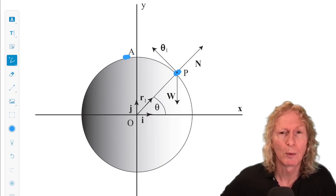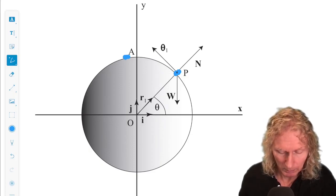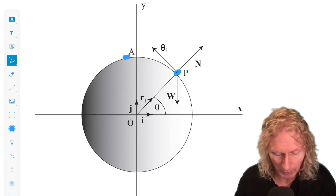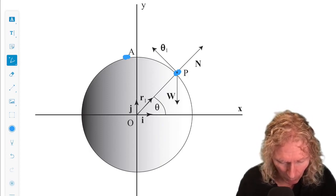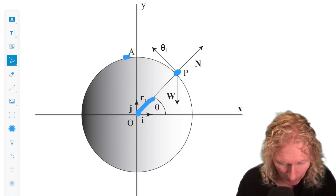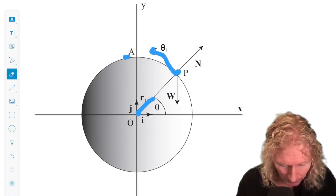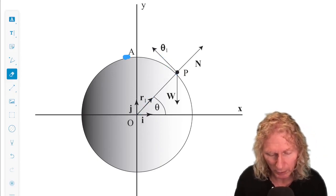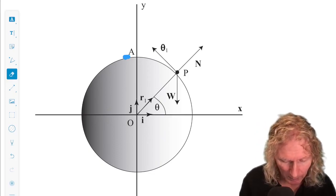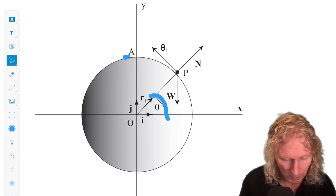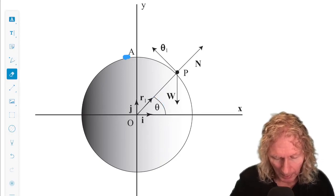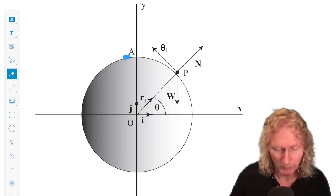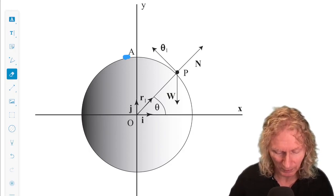We're going to use what we developed earlier in the course on the unit vectors for the polar coordinate system. Those would be R1 and theta 1. R1 is in the radial direction locating P, and theta 1 is in the direction of increasing theta. I and J are just the usual fixed unit vectors, fixed in direction and fixed in length.